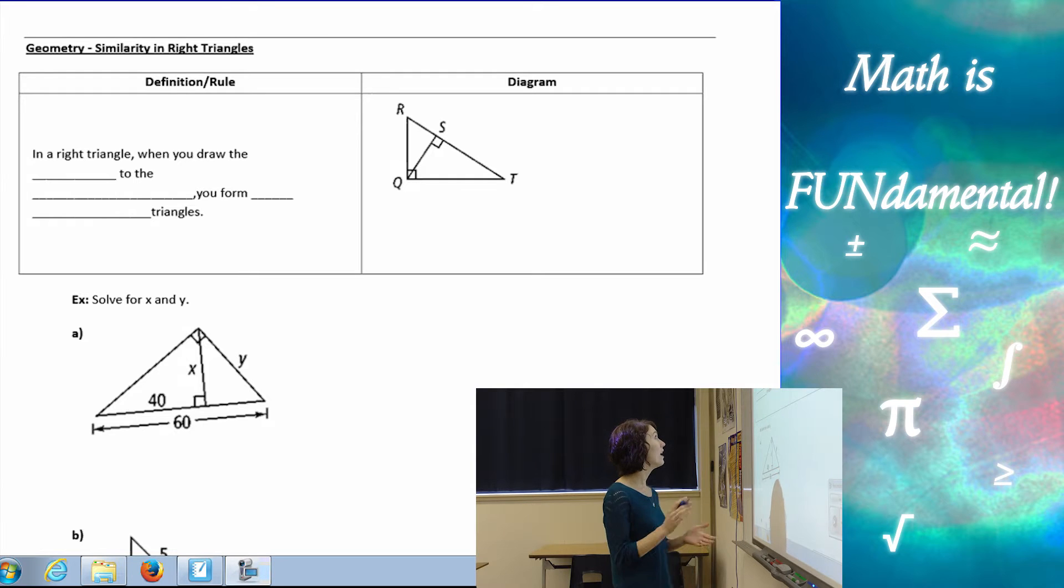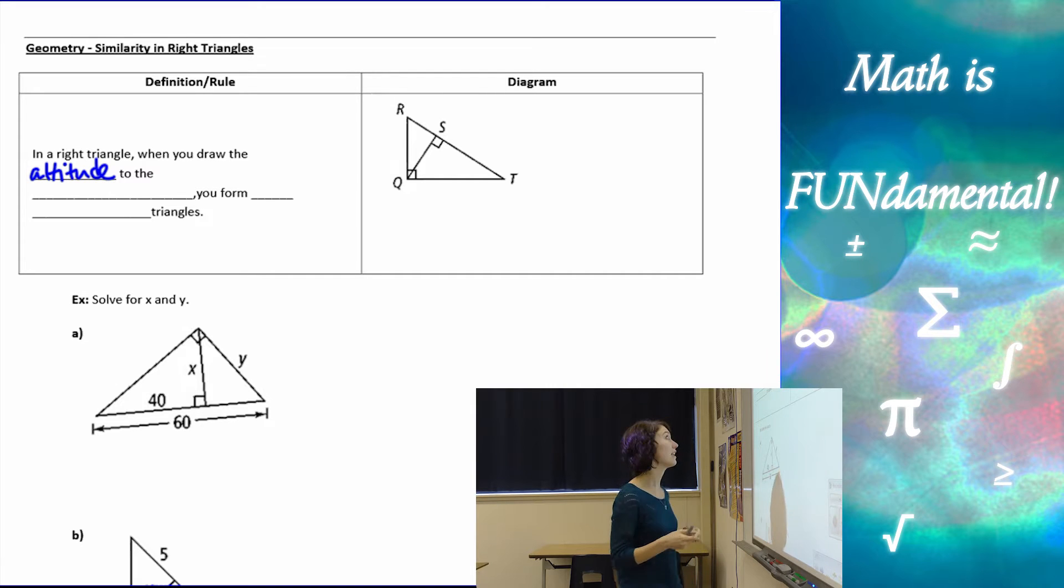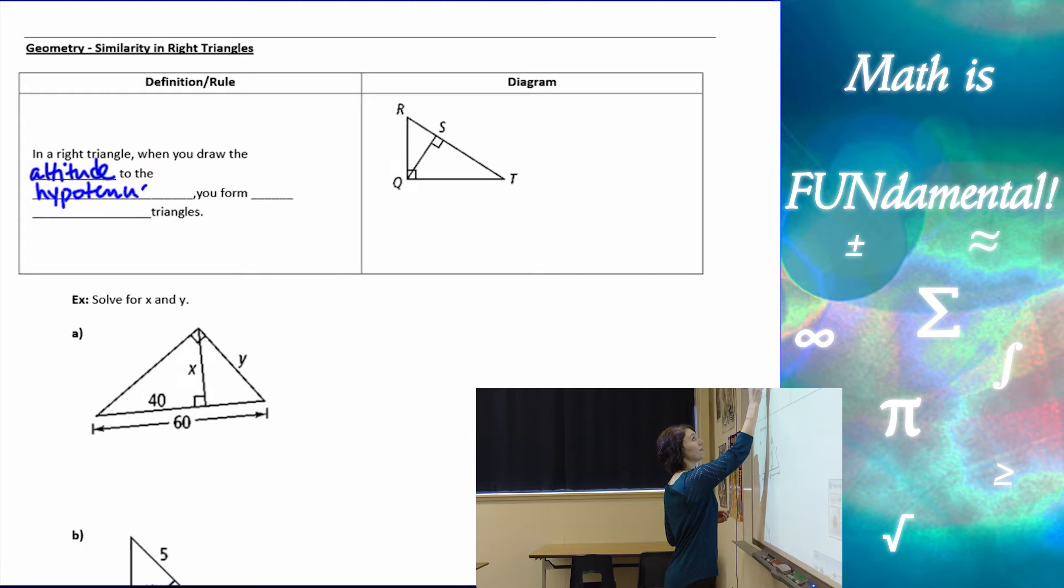The rule of thumb here is that in a right triangle, if we draw the altitude, which goes from the vertex perpendicular to the opposite side, if we draw it to the hypotenuse specifically, then we form three similar right triangles.